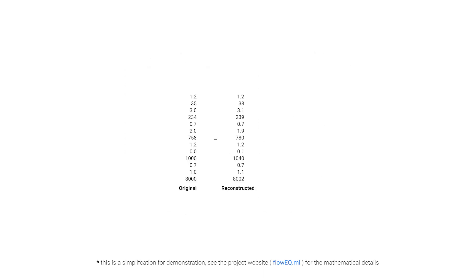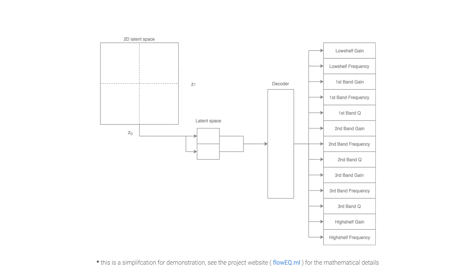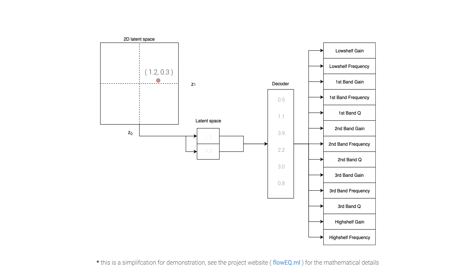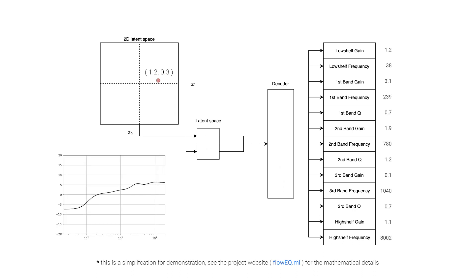During training, we measure the difference between the original and reconstructed parameters, and we use this to update the weights of the encoder and decoder networks until convergence. To make this model useful, we employ the decoder as a generative model. We can then easily sample points from the latent space and generate new sets of parameters that represent relevant configurations of the equalizer.